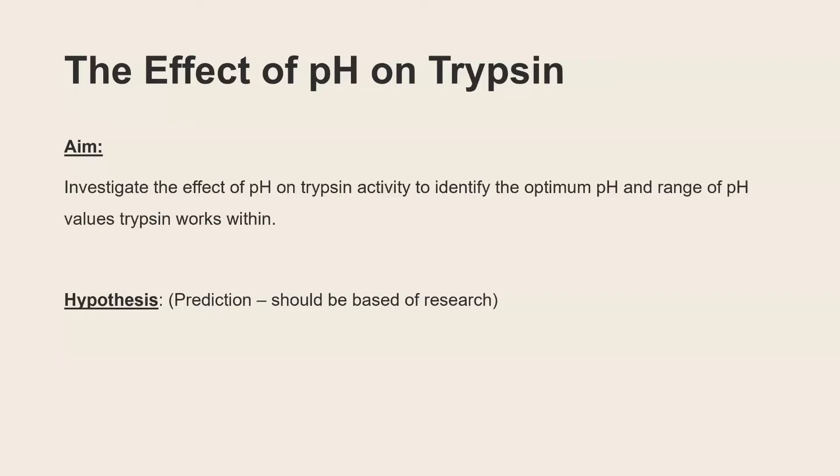So the aim of this investigation is to look at the effect of pH on trypsin activity to try and allow us to identify the optimum pH and also the range of pH values that trypsin works within. The hypothesis, which is a prediction based on research, the prediction I'm going for is that trypsin will work within a range of pHs from pH 4 to 11 and that pH 9 will be the optimum.